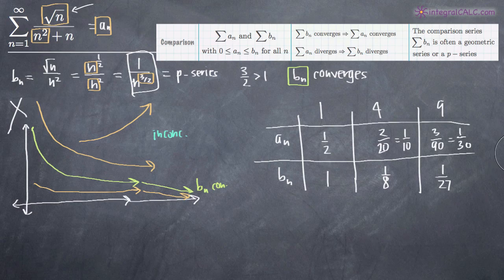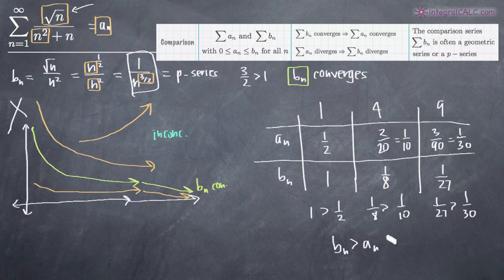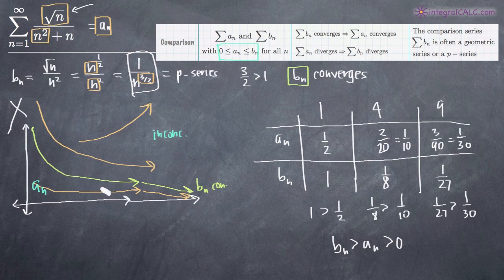We can see that b sub n is always larger than a sub n — for example, 1 over 27 is greater than 1 over 30. We've concluded that b sub n will always be larger than a sub n, and neither series will ever be negative, so both are greater than 0. We've shown that b sub n is greater than a sub n, which is greater than 0. Since b sub n converges and a sub n is always less than b sub n, we've proven that a sub n also must converge.